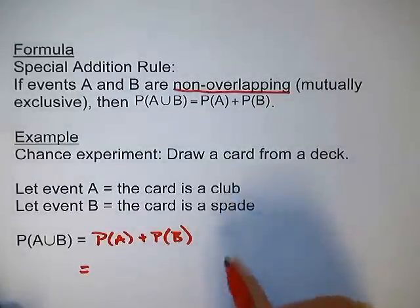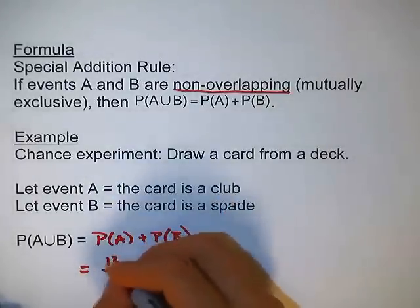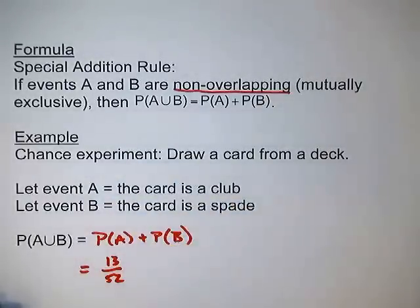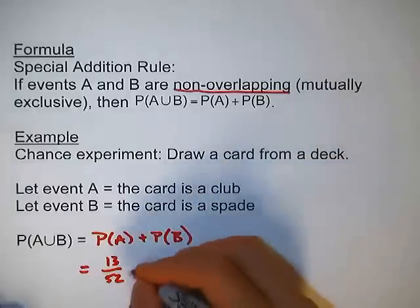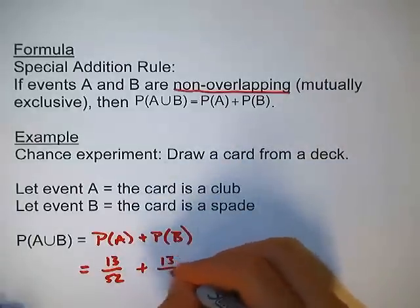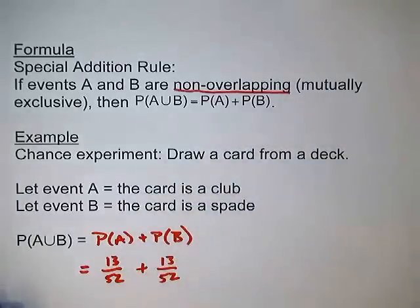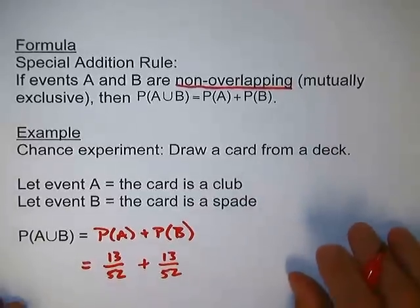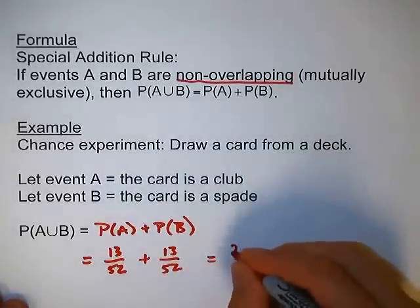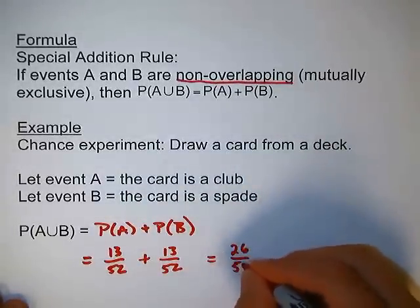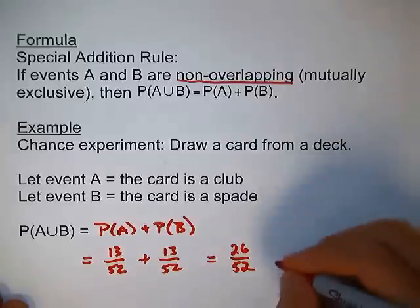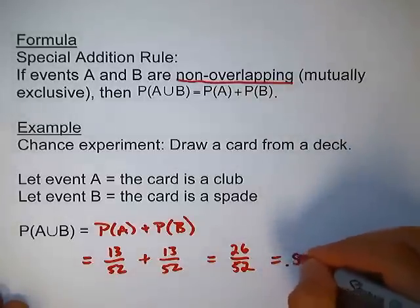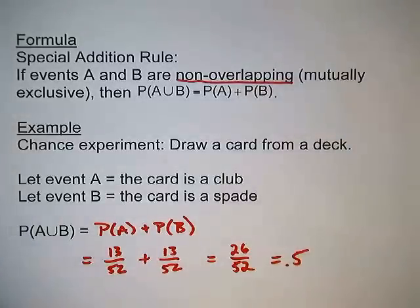The probability of getting a club is 13 out of 52. The probability of getting a spade is the same probability, 13 out of 52. So if we add those two up, we end up with 26 out of 52, which is simply 0.5. So there's a 0.5 probability of drawing a card and getting either a club or a spade.